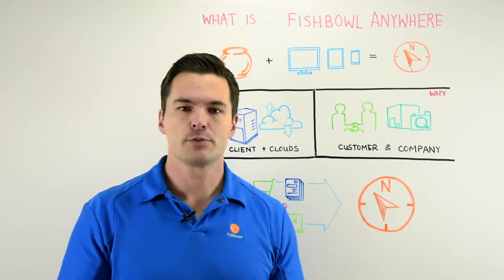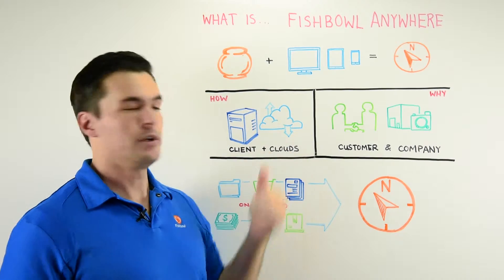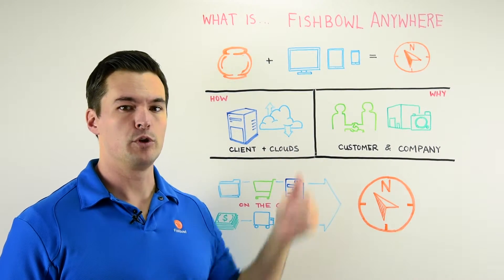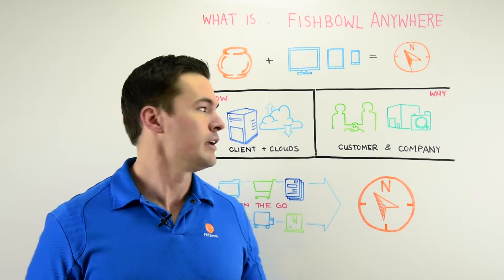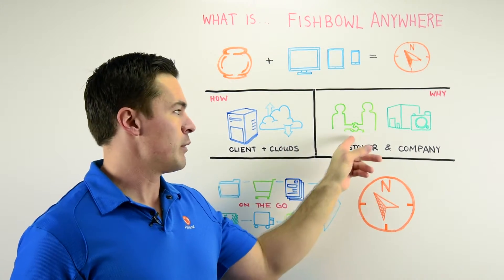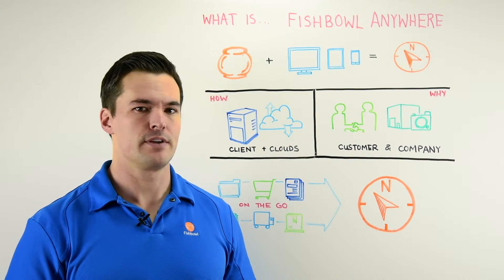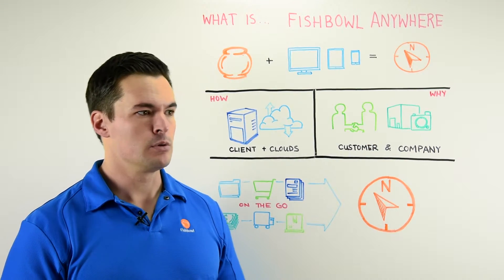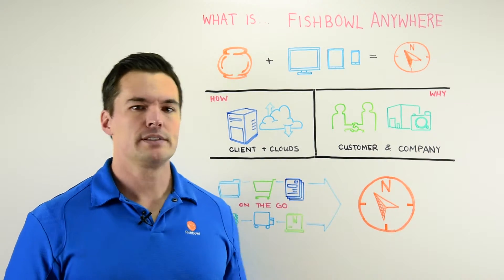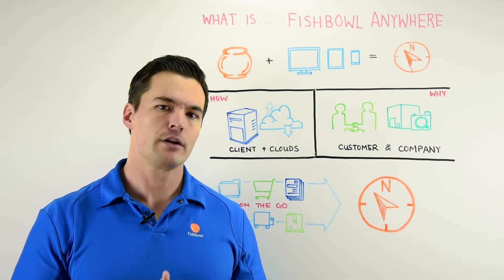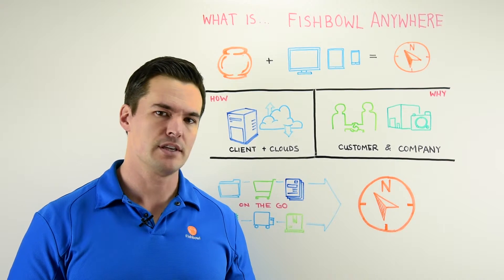Think of it this way. You have your client sitting at your company computer, and when you combine that with the cloud or the internet, you could be out with a customer, check your mobile device and know your inventory levels right then. You could be out and about and immediately get a quick snapshot of how your company is doing — with a reorder point, with shipping and receiving.